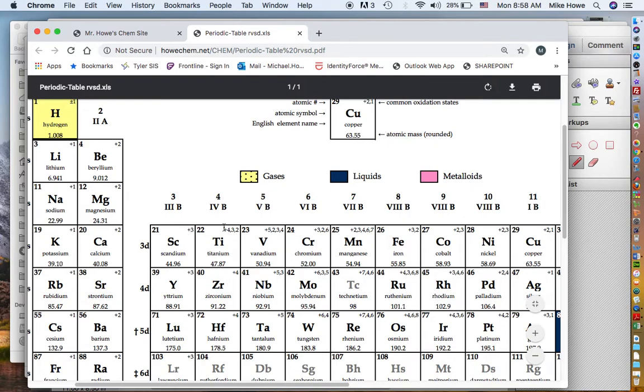As opposed to something like titanium, who has three different charges, or vanadium, which has four different possible charges, or chromium, which has three different possible. Those are called variable metals. Magnesium would have only a plus two charge. It's just a single charge. It's not variable. Variable means you've got more than one possibility.